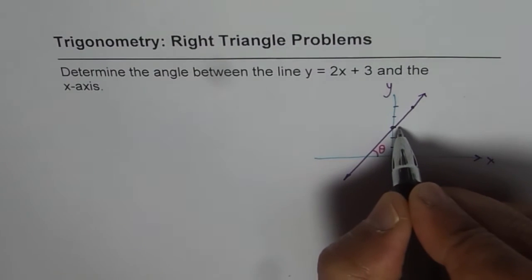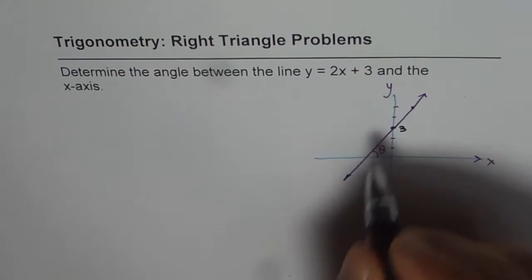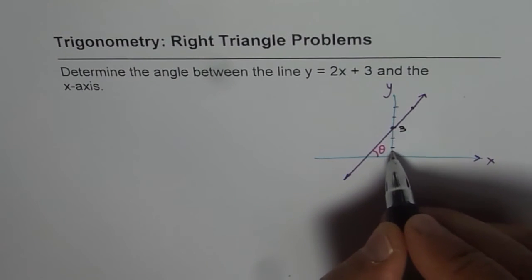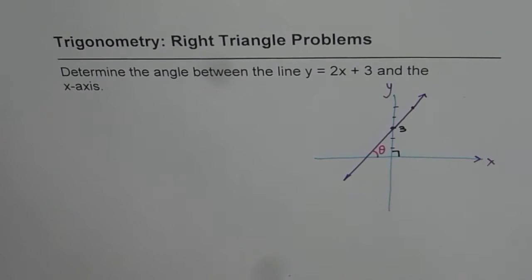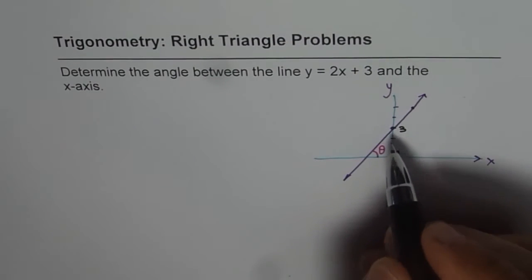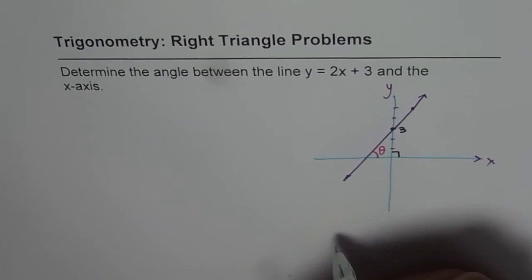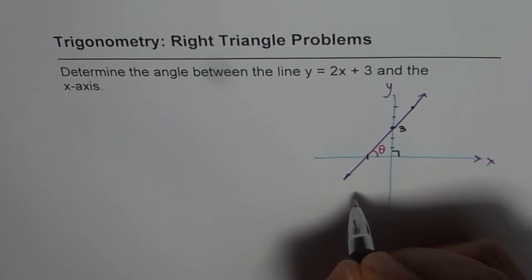Now we know the y-intercept is 3. And as you can see, the y-axis and x-axis are always at right angles. Therefore, we have a triangle here which is a right triangle.